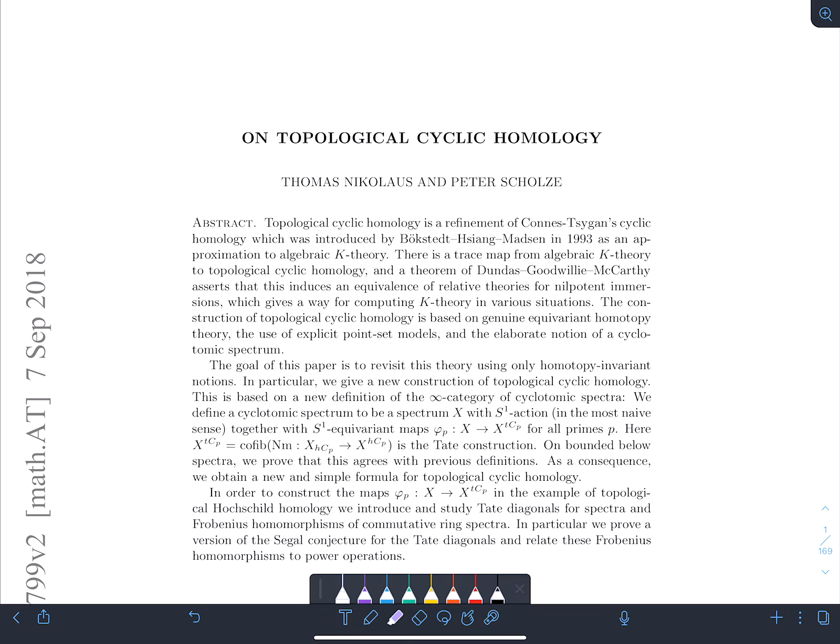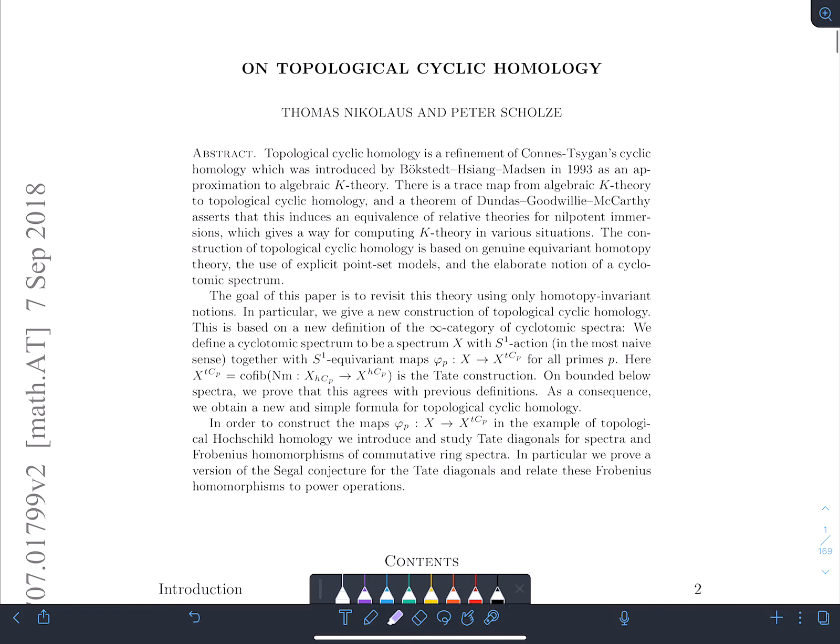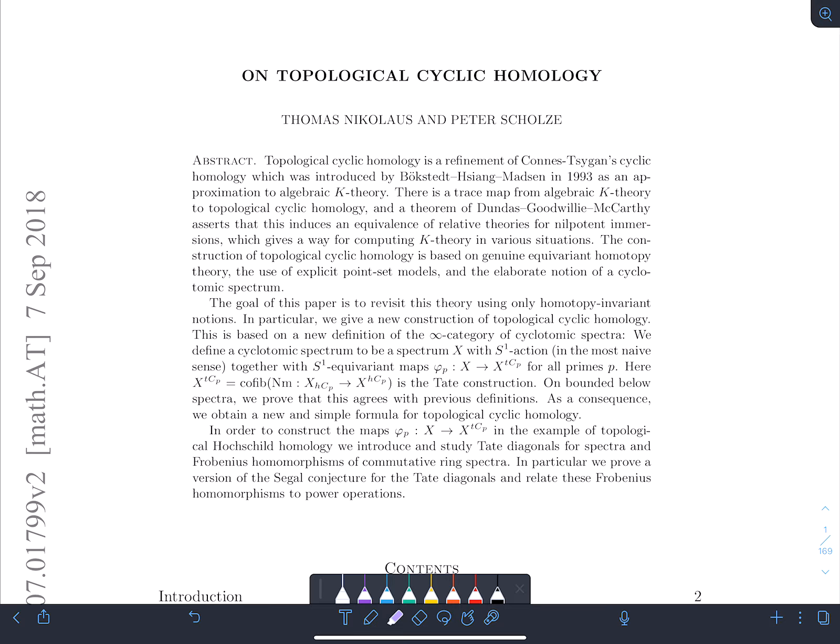This begins a series of videos where I just read a paper and teach myself. I'm starting with this really important recent paper of Thomas Nicolaus and Peter Schultze on topological cyclic homology. This is a paper that I've been wanting to read for quite some time because my own research is related to topological cyclic homology and algebraic K-theory.